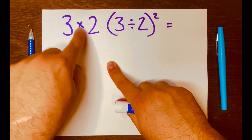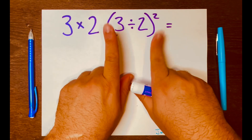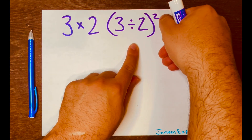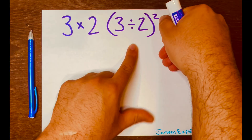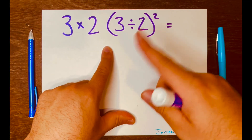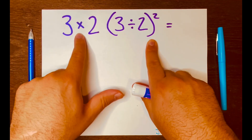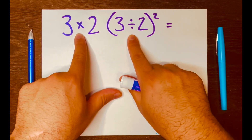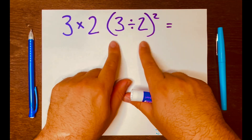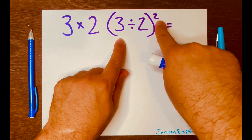The problem is: three times two, and then you have three divided by two inside parentheses, and then you have this exponent two. To start solving this problem, I'm thinking of PEMDAS because I see parentheses, multiplication, division, and an exponent. According to PEMDAS, the parentheses will go first.